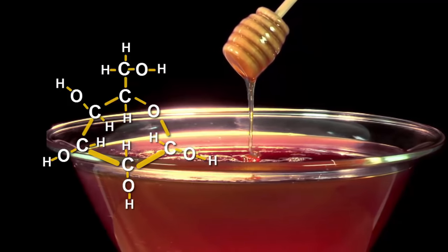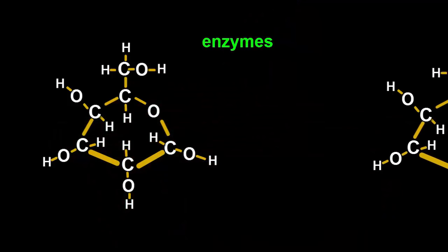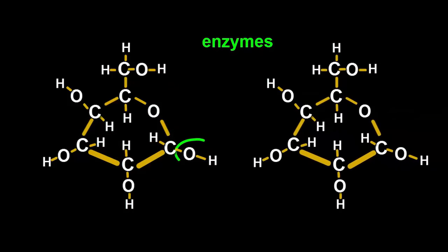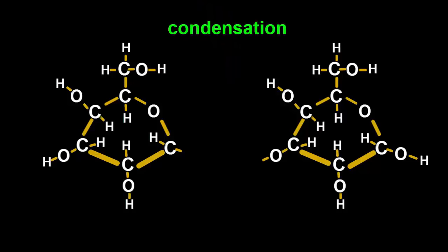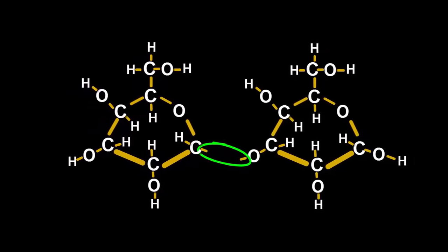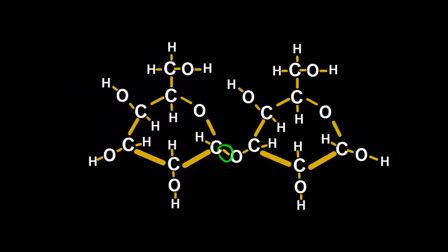Using helper molecules called enzymes, plants can link two glucose molecules together by the removal of an OH group from one and an H from the other, which then come together to form a water molecule, H2O. This water extraction called condensation opens up two unused bonds, one on each remaining glucose molecule, that can then be used to join them together into a new molecule called maltose.